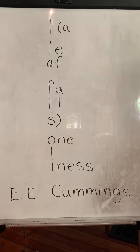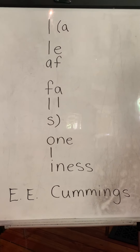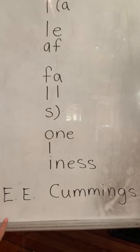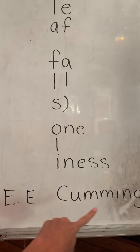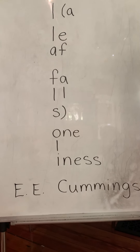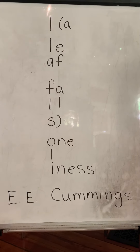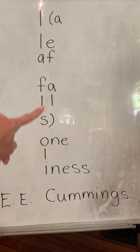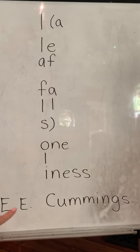This is a very famous poem called A Leaf Poem by E.E. Cummings — that's the poet's name — and the poem is called 'a leaf falls.' So think about a leaf falling and look at how this is written.